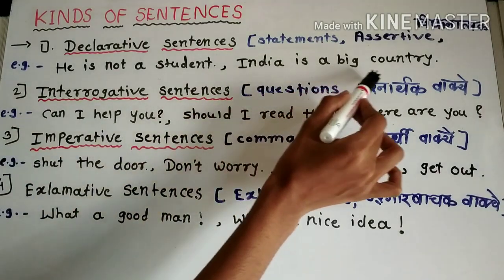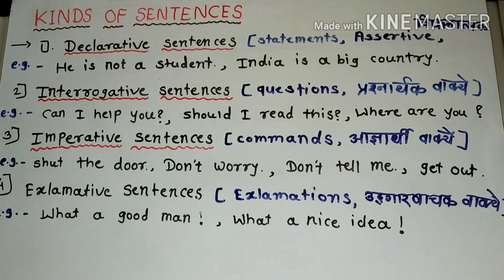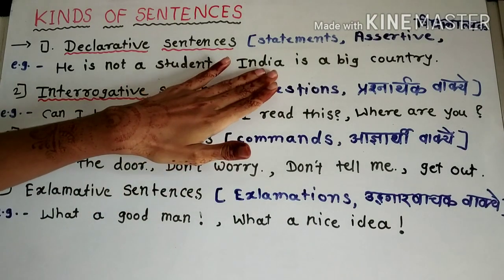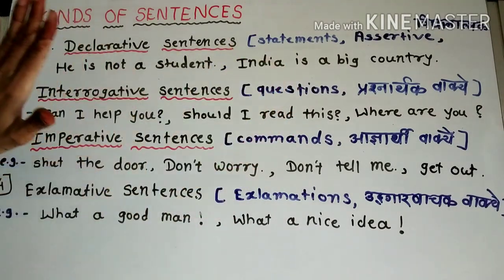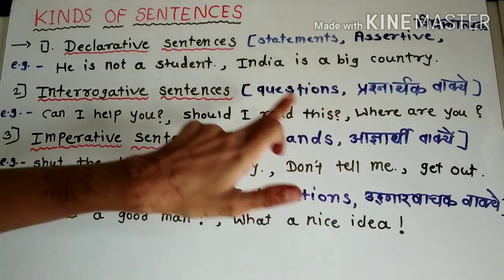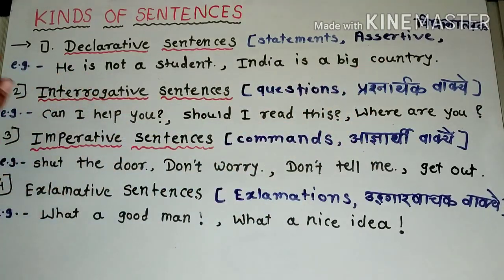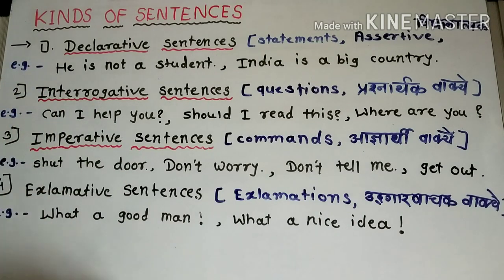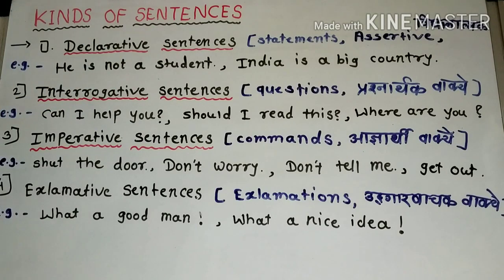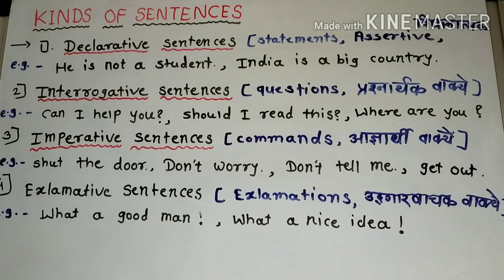Another example: 'India is a big country.' Here again, we are not asking a question, giving an order, or expressing surprise. We are simply making a plain statement. That is declarative sentences — the sentences we use in daily life to make simple statements.